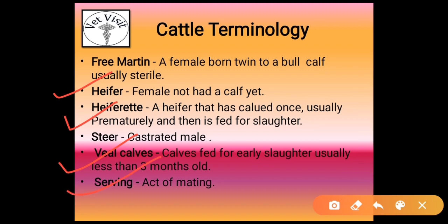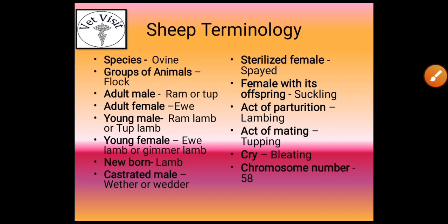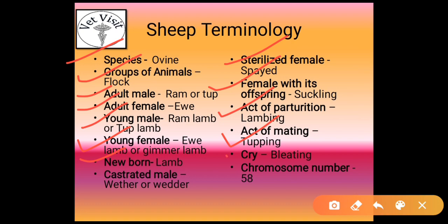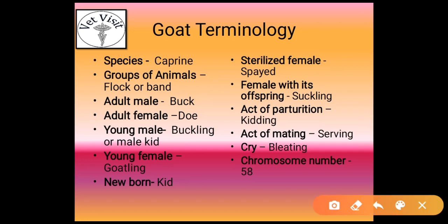For sheep, the species is ovine. A group of sheep is known as a flock. Adult male is known as ram or tup. Adult female is known as ewe. Young male is known as ram lamb or tup lamb. Young female is known as ewe lamb or gimmer lamb. Newborn is known as lamb. Castrated male is known as wether or wedder. Sterilized female is known as spayed. Female with its offspring is known as suckling. Act of parturition in sheep is known as lambing. Act of mating is known as tuping. Cry is known as bleating. Chromosome number is 54.